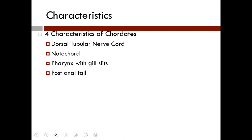Secondly, at some point in the life cycle, all chordates have a dorsal tubular nerve cord. The chordate nerve cord differs from most other animals in that it is located dorsally rather than ventrally, and it is hollow rather than solid. This nerve cord will eventually become the spinal cord, which attaches superiorly to what enlarges to form the brain, making up the central nervous system.